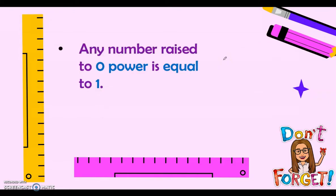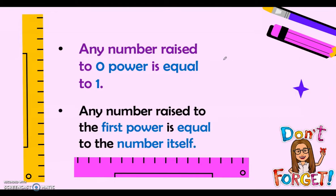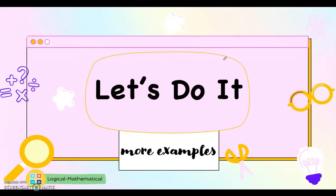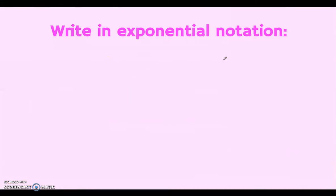Any number raised to the power of 0 is equal to 1. For example, 10 to the power of 0 equals 1, 100 to the power of 0 equals 1, and 150 to the power of 0 equals 1. Any number raised to the first power is equal to the number itself.